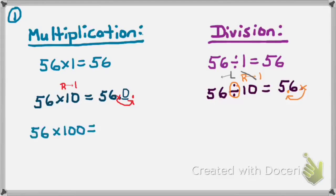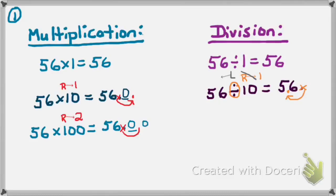Let's try another one. If I have the problem 56 times 100, I see 100 is a power of 10 number — it's a 1 with zeros. I know 100 is greater than 1, which means I move my decimal to the right two places because there are two zeros. I write 56, remove the invisibility cloak to find the decimal, cross it out, and move it two places to the right, adding a place value zero as needed. So 56 times 100 equals 5,600.